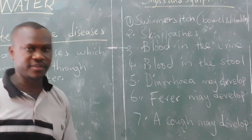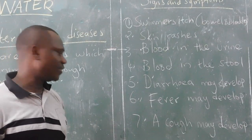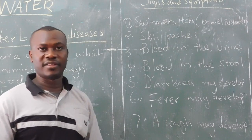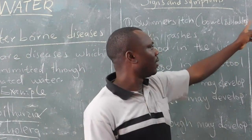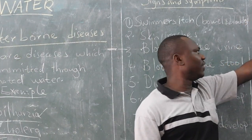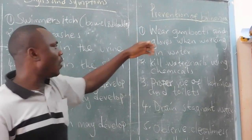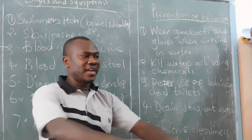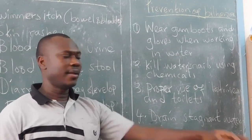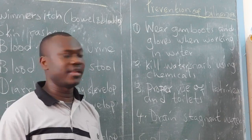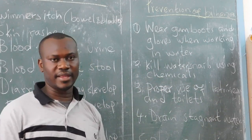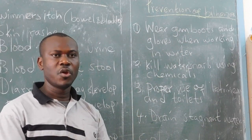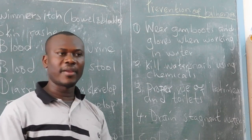How do we prevent ourselves from contracting this disease? Number one: people who are working in water or flooded areas, areas around canal plants and rice pumps — these people need to wear gumboots and gloves when working in these areas, because the gumboots and gloves will prevent bilharzia worms from getting into your skin.